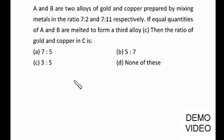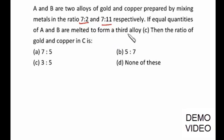Now let's see this problem. Here we have been given A and B are two alloys of gold and copper prepared by mixing metals in the ratio 7:2 and 7:11 respectively. If equal quantities of A and B are melted to form a third alloy C, then the ratio of gold and copper in this particular alloy is what? Equal quantities — here suppose I take it.